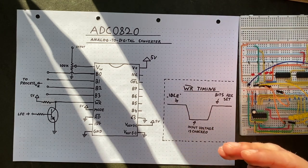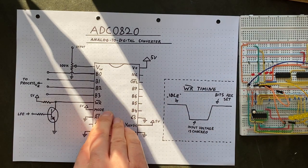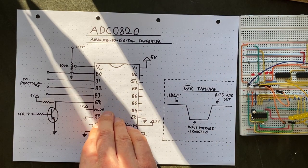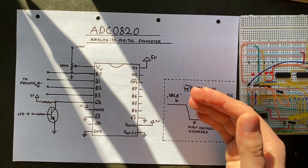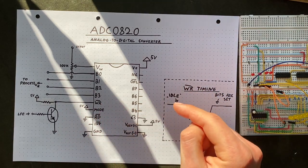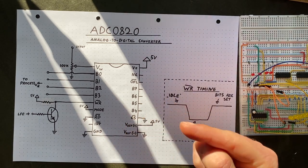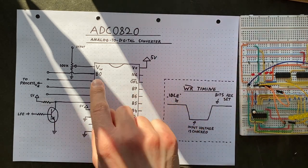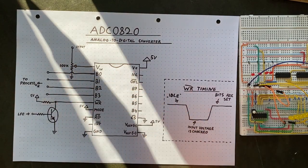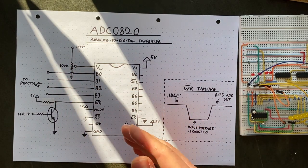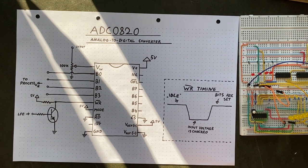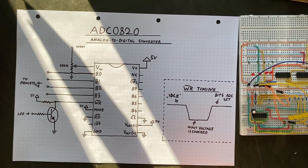One word of advice beforehand though. Since we're operating this chip from a 5V power supply, we need to be careful with the voltages that we send in. They shouldn't be larger than those 5V because the chip might be damaged otherwise. So with our potentiometer, we can also somewhat protect our chip if we use it to cut down the input voltage.